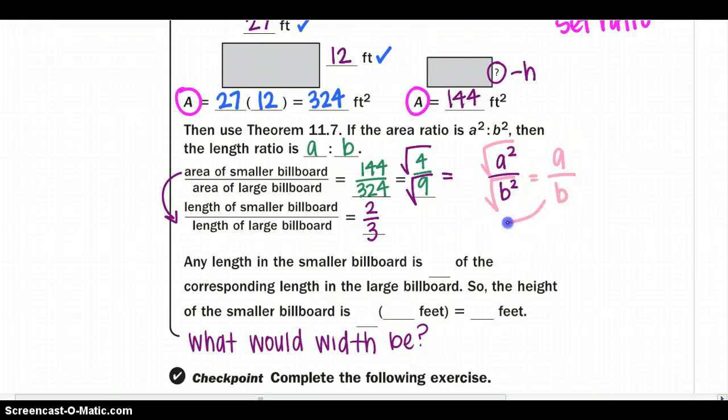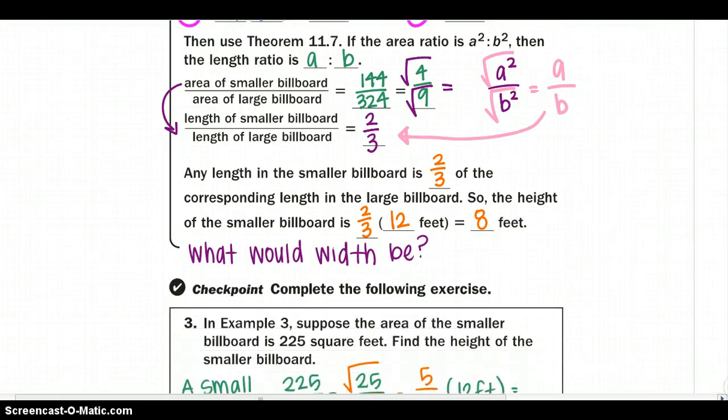If you have questions about that, remember A squared over B squared would be our area. And then to cancel those squares, you square root to get A over B. Now we're going to use that. Any length of the smaller billboard is 2 thirds of the corresponding length of the large billboard. So the height of the smaller billboard, I'm going to use my ratio times my side, and I would get 8 feet for the height.